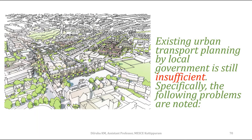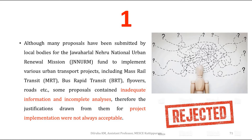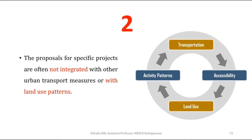Local governments have existing urban transport planning for local areas, but this is insufficient. The main problems are inadequate information and incomplete analysis. Although many proposals have been submitted by local bodies for the Jawaharlal Nehru National Urban Renewal Mission fund to implement urban transport projects — including mass rail transit, bus rapid transit, flyovers, and roads — some proposals contain inadequate information and incomplete analysis, causing project rejection.